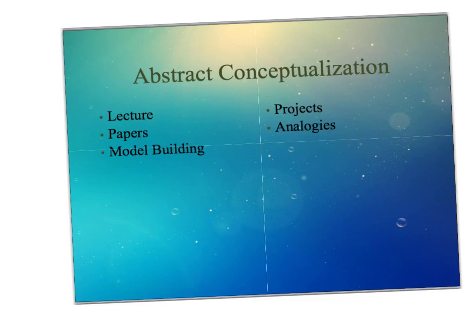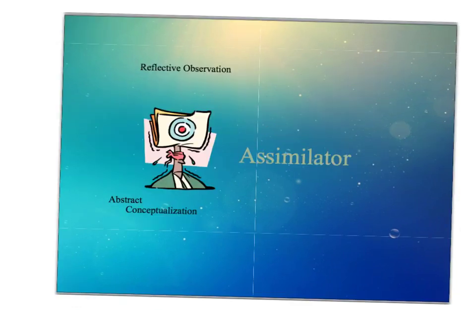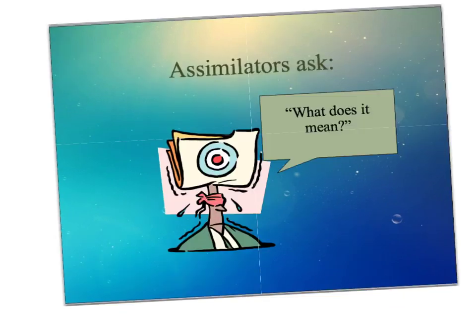Abstract conceptualisation examples include lectures, papers, model building, projects, and analogies. Think of another idea that might fit and bring it to the lesson. Looking at reflective observation and abstract conceptualisation together, these people are normally called assimilators — people who learn and understand information or like to be observed and incorporated within that information. Assimilators ask: what does it mean? Think about that and we'll discuss it further in the lesson.